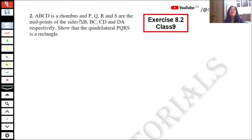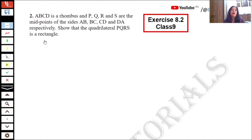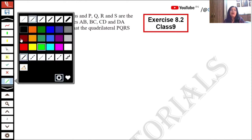Second question, Exercise 8.2, Class 9th. ABCD is a rhombus and P, Q, R, and S are the midpoints of sides AB, BC, CD, and DA respectively. Show that quadrilateral PQRS is a rectangle. So this is why we have to make a diagram.